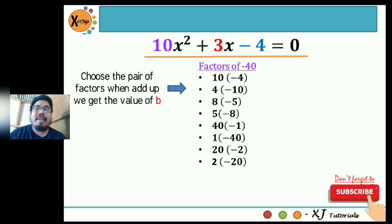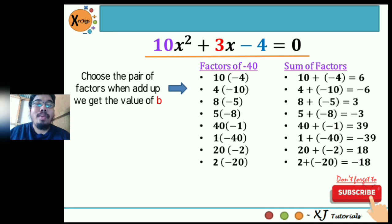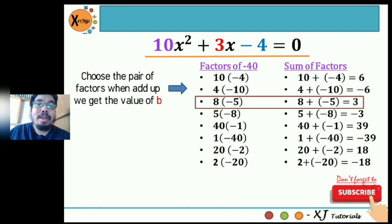Next is to choose the pair of factors that when added up, we get the value of b, which is positive 3. We get the sum of each pair: 10 plus negative 4 is 6; 4 plus negative 10 is negative 6; 8 plus negative 5 is positive 3; 5 plus negative 8 is negative 3; and so on. The only pair with a sum of positive 3 is the third pair: 8 and negative 5.